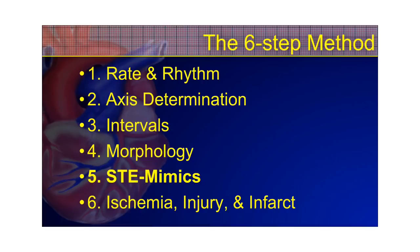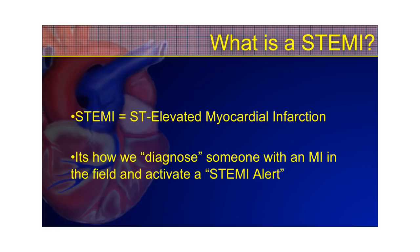When you're using the six-step method for 12-lead EKG interpretation, first learned by Tom Boutillet of ems12lead.com, you're going to identify the rate and the rhythm, do your axis determination and identify if there's any axis deviations and any pathologies associated with those, identify your intervals and your changes in morphologies. And then step five, where we are right now, you're going to look for any STE mimics.